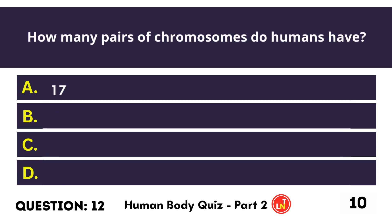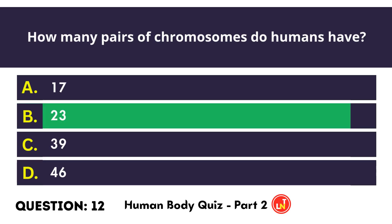How many pairs of chromosomes do humans have? 23.